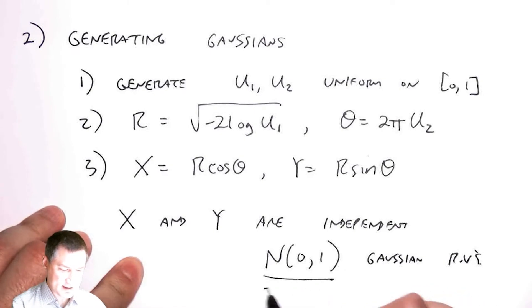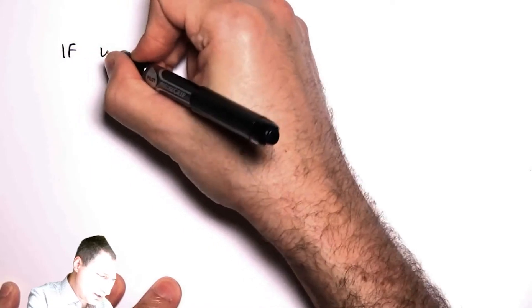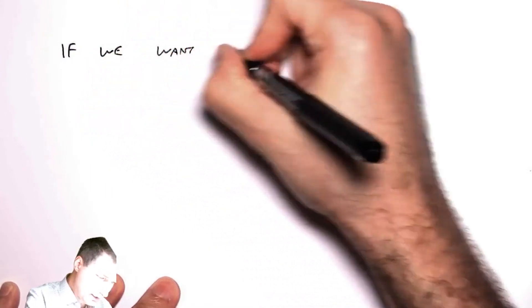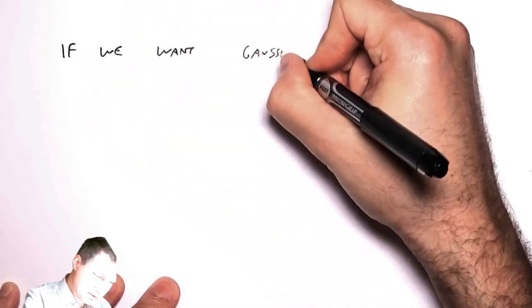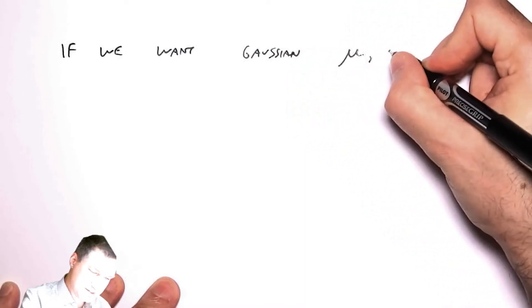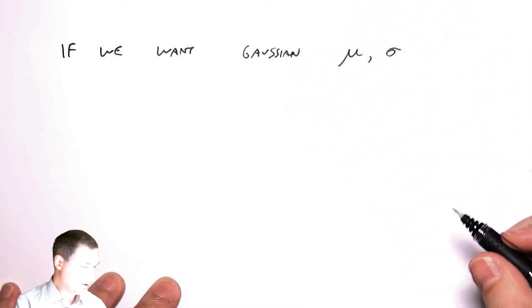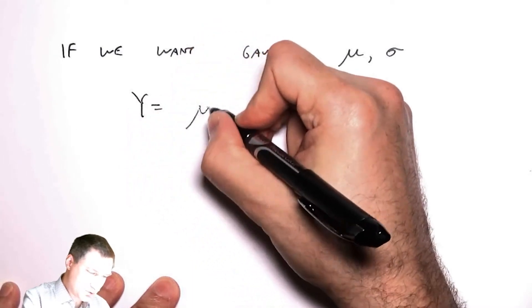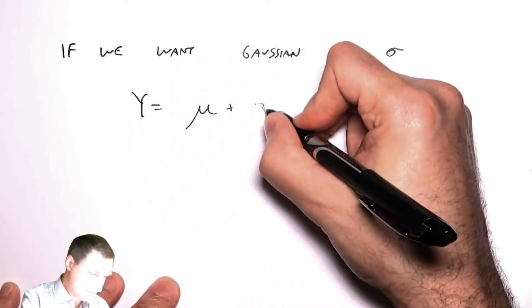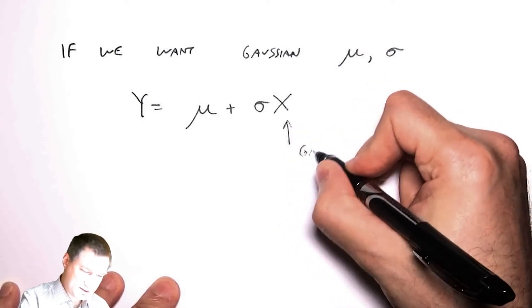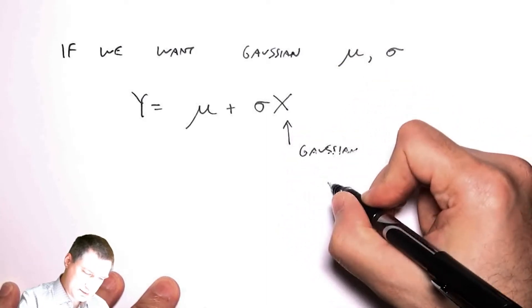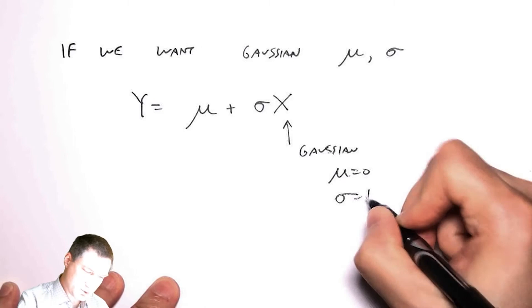If I instead don't want a normal 01 random variable, if we want a Gaussian with mean and sigma that are not equal to zero and one, then I can basically just transform a Gaussian that has mean zero and sigma equals one to get a new Gaussian that has the desired mean and sigma. We talked about how the transformation of a Gaussian is a Gaussian, so that's pretty handy.